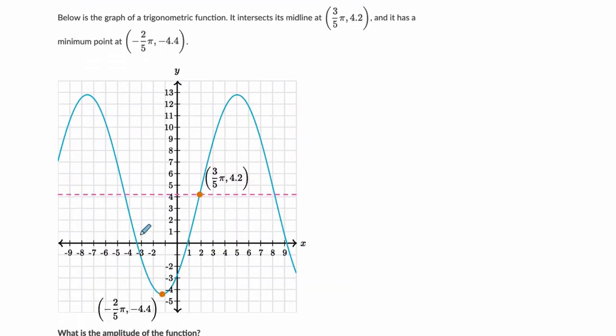All right, finally here, we just want to change our strategy a little bit. They say we have the midline at this point, 3 fifths pi and 4.2, so that tells me the height of the midline is at 4.2, and it has a minimum of negative 2 fifths pi and negative 4.4. So the height here is at negative 4.4. So I want to find the amplitude.